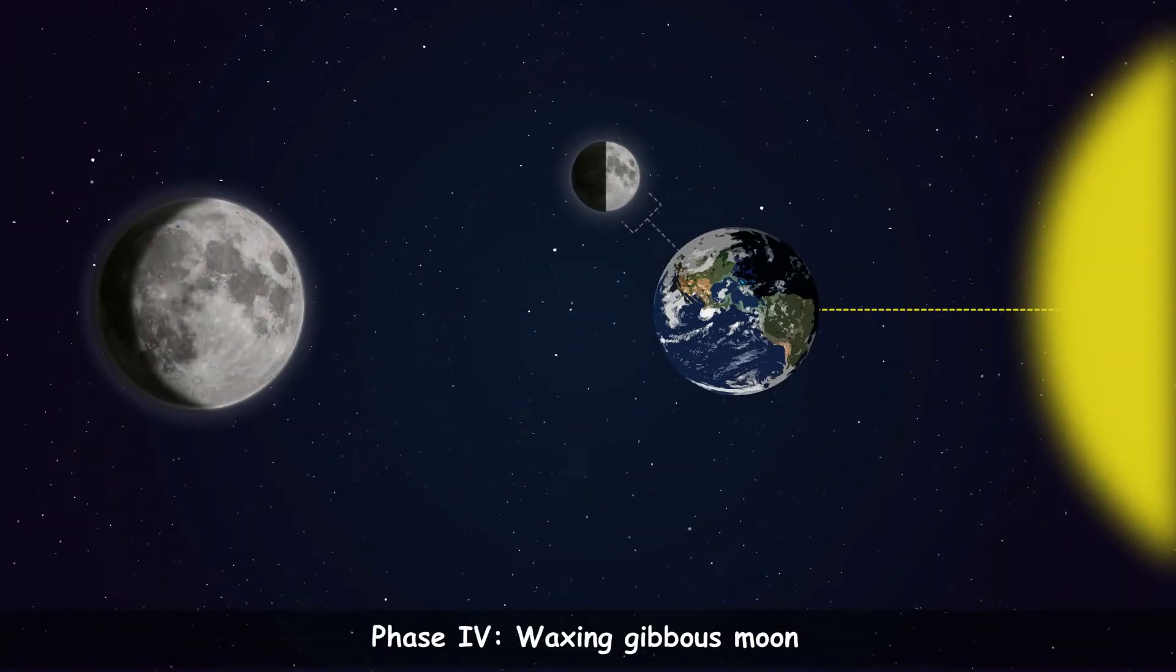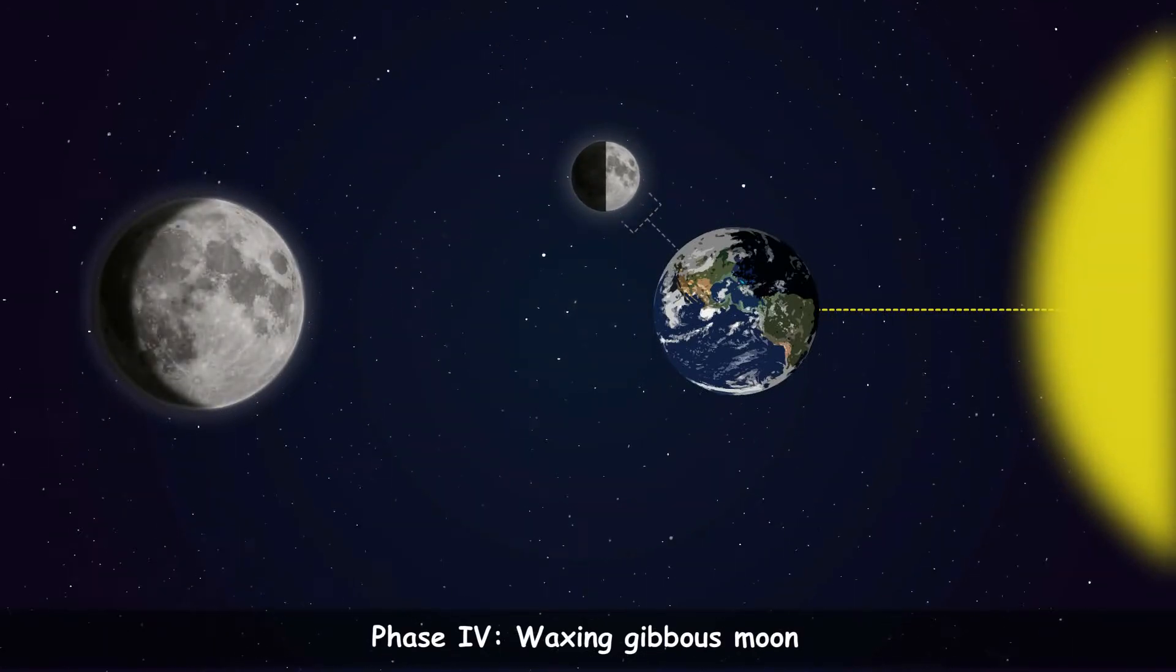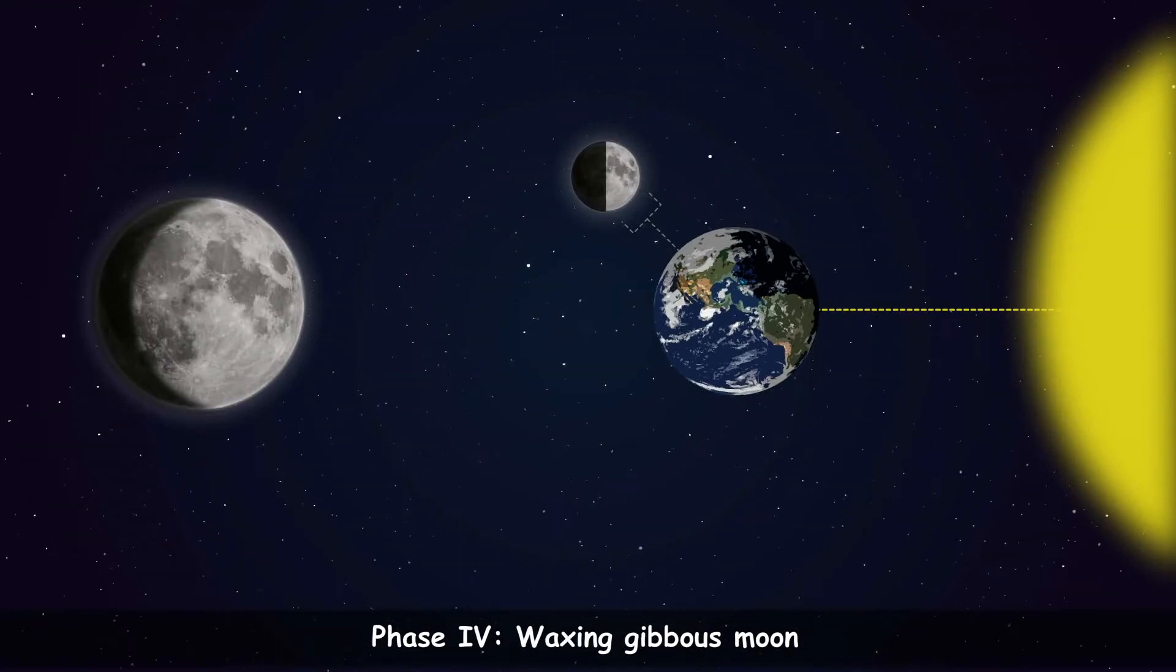Phase 4 is the Waxing Gibbous Moon. The moon appears more than half lit. The moon shows a hump.